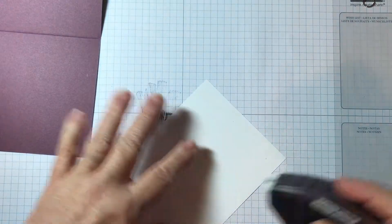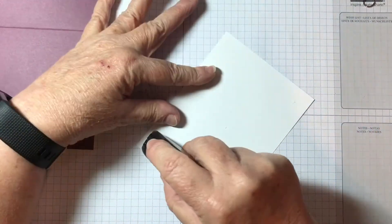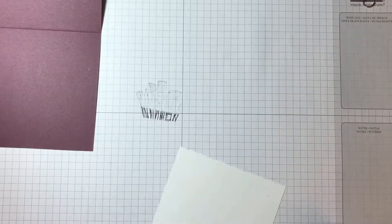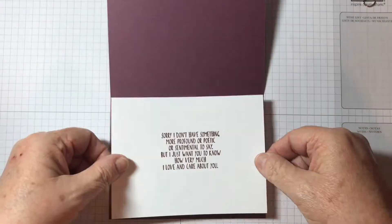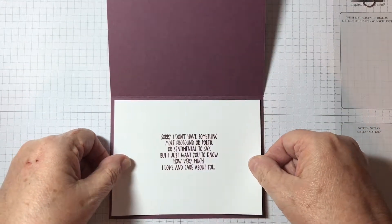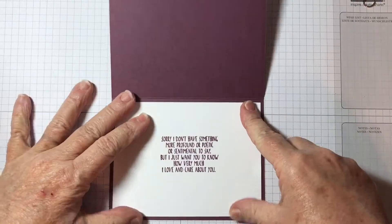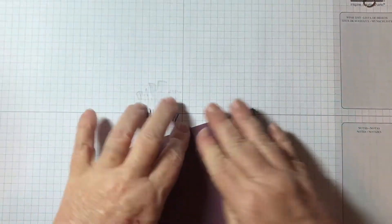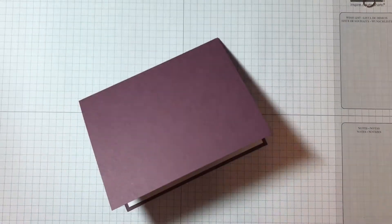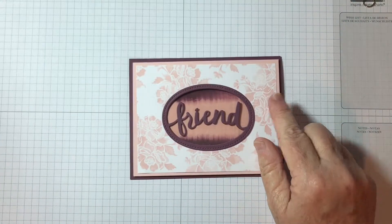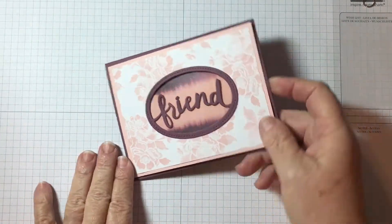I'm going to mount that on the inside of my card. I'm using Fast Fuse. When you use Fast Fuse, you want to come straight down and then just kind of snip it off. There is a learning curve with Fast Fuse, but it is very, very secure. So we've got the bottom of our card done.